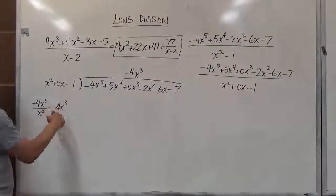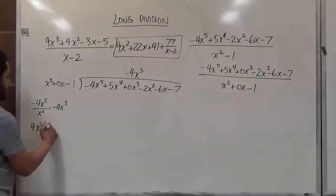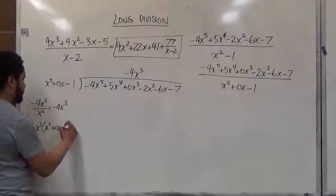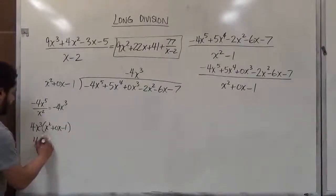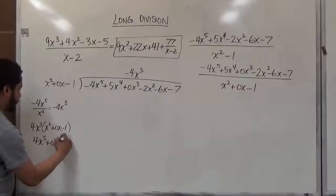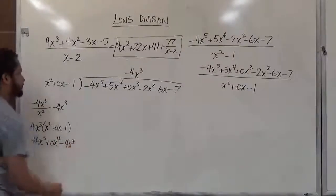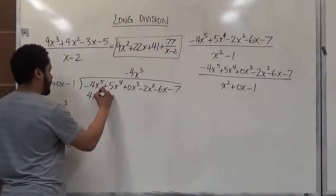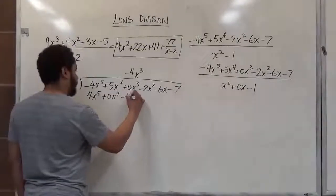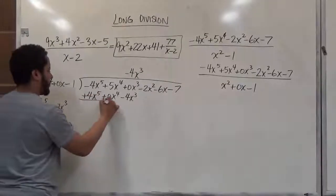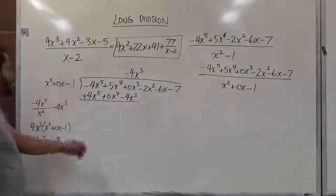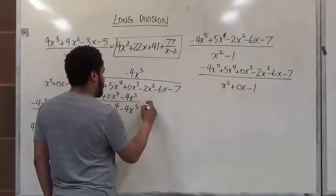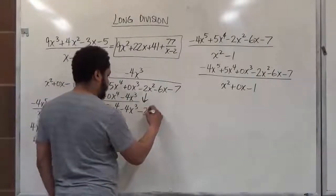We take the opposite of negative 4x cubed, which is positive 4x cubed, and multiply by x squared plus 0x minus 1. This gives us 4x to the fifth, 0x to the fourth, and negative 4x to the third. We stack and subtract: the first two terms cancel, the second two create 5x to the fourth, then negative 4x to the third, and we bring down negative 2x squared.